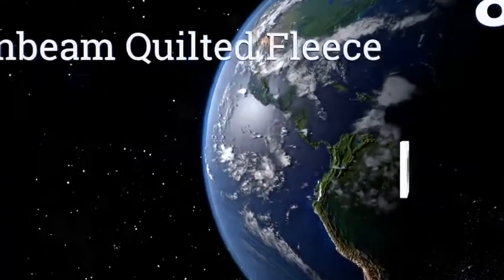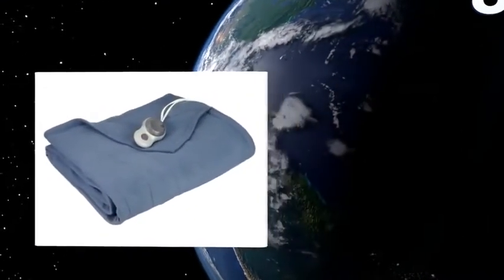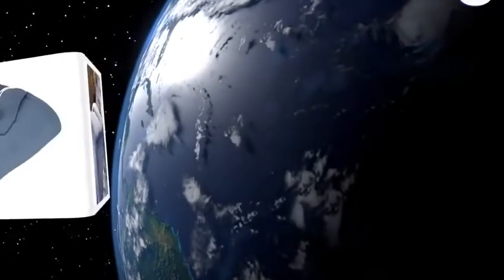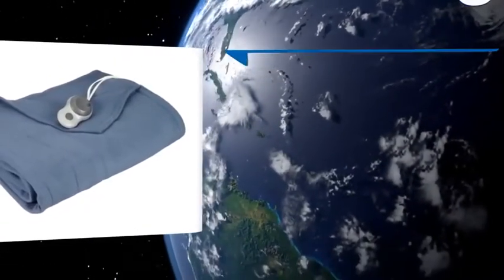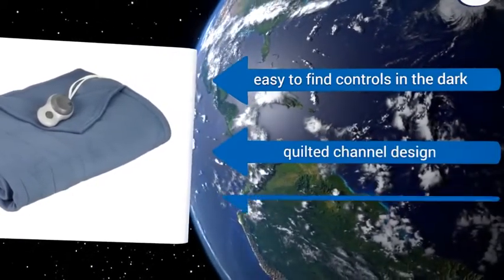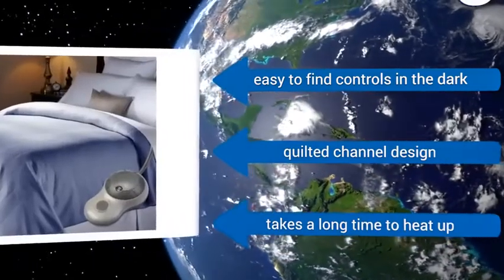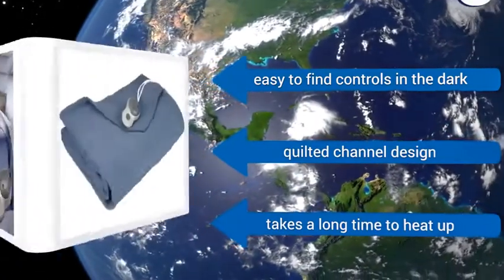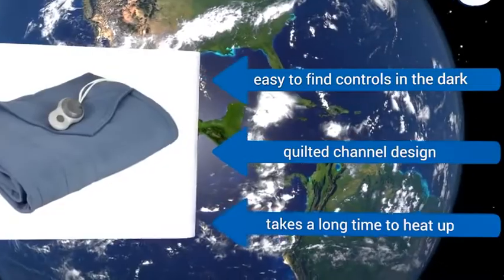Coming in at number eight on our list, the Sunbeam Quilted Fleece offers 10 heat settings with a 10-hour auto-off safety feature so you can sleep soundly. It's made from 100% polyester, which makes it durable, stain-resistant and good at trapping heat without letting in cold air. It's easy to find the controls in the dark and has a quilted channel design. However, it takes a long time to heat up.